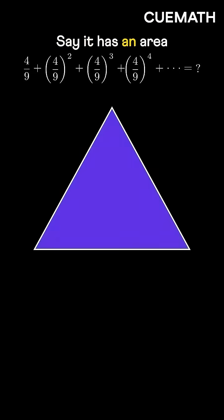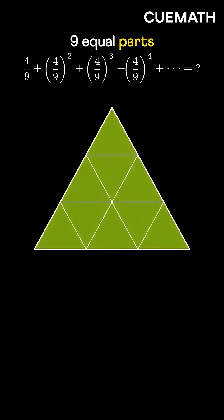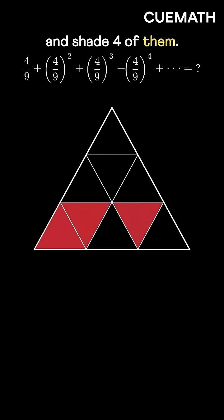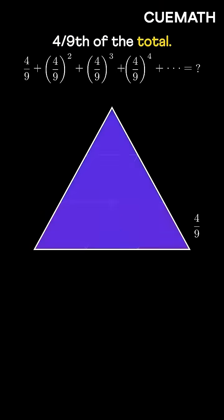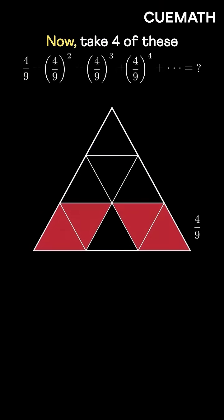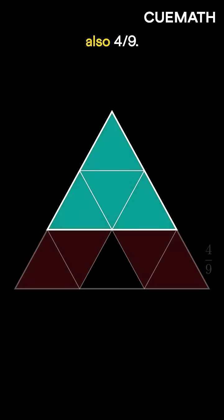Say it has an area of 1. Divide it into 9 equal parts and shade 4 of them. The shaded area is 4 ninths of the total. Now take 4 of these upper triangles — their area is also 4 ninths.